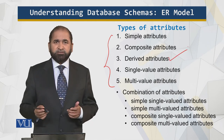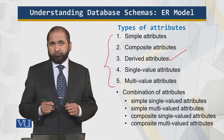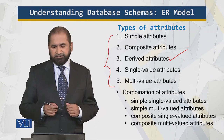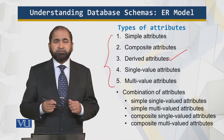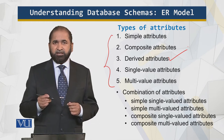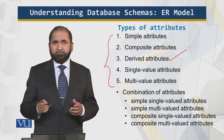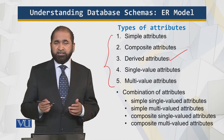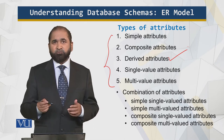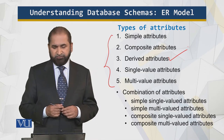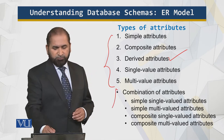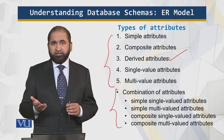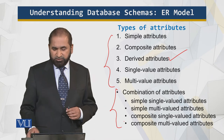Derived attributes are not actually stored in the database. The date of birth is stored, but using it I can calculate the age of a person, which changes every day. Then I have single-valued attributes — a student can have a single unique ID. Multi-valued attributes mean a single student can have multiple mobile phones registered in their name. Of course, combinations of these attributes are also possible.